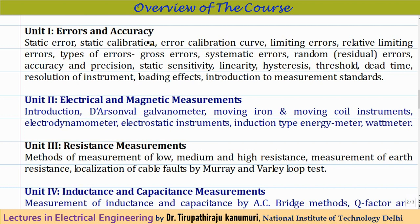Module 1 starts with errors and accuracy. We will cover static error, static calibration, error calibration curves, limiting errors, relative limiting errors, and different types of errors: gross error, systematic error, and random or residual errors. Then we will see accuracy and precision — this is the most commonly asked question in interviews, because most people confuse the difference between accuracy and precision.